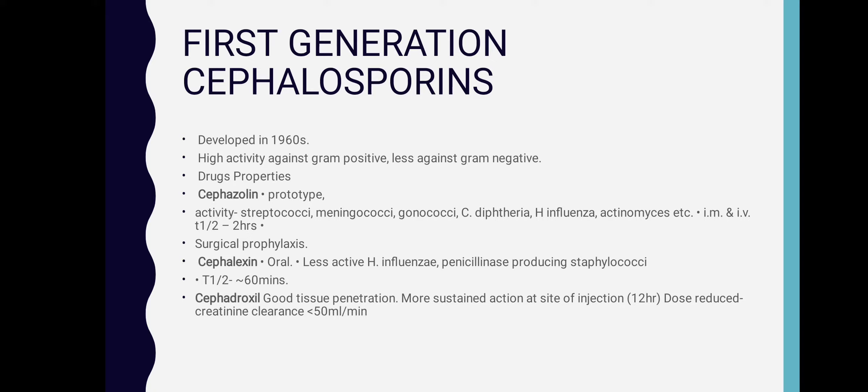Cefadroxil is used in renal impairment patients when creatinine clearance is less than 50 mL per minute. Moving on to second generation cephalosporins — they are active against gram-negative organisms but do not have any activity against Pseudomonas aeruginosa, which is noted separately because it is also a gram-negative organism.